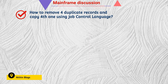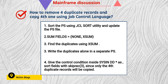The next question is: how to remove duplicate records and copy the fourth one using JCL? Using the SORT utility, we need to sort the particular PS file. There is a keyword called SUM FIELDS=NONE with XSUM. We have to use XSUM, which stores the duplicate values alone in a separate dataset.